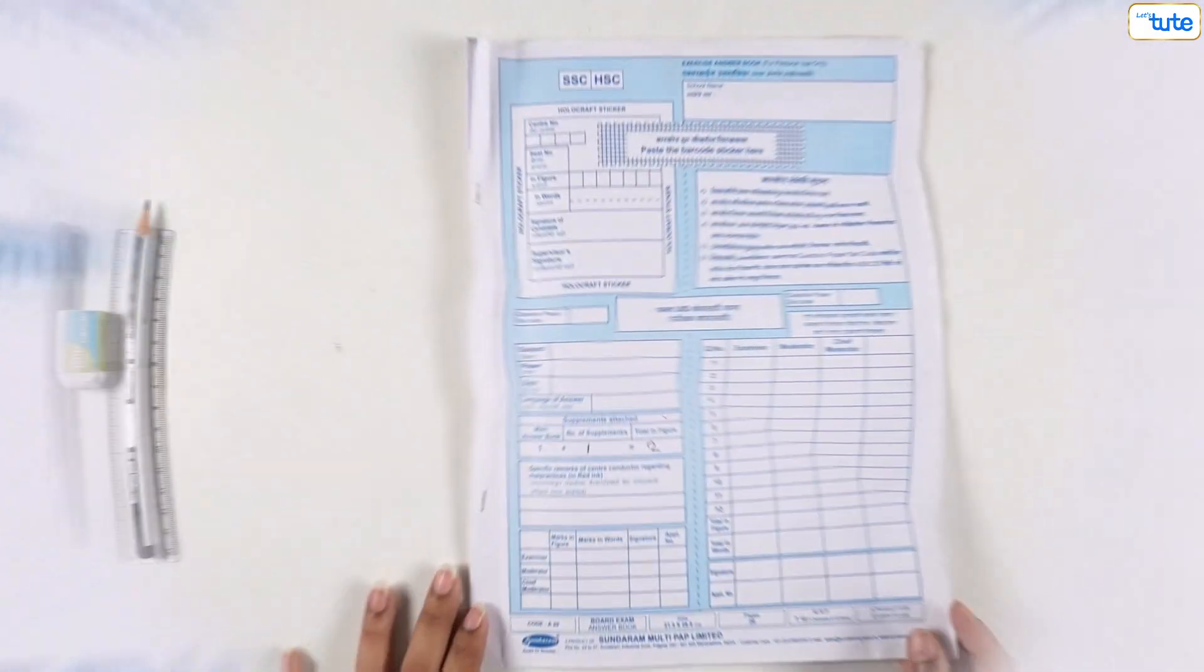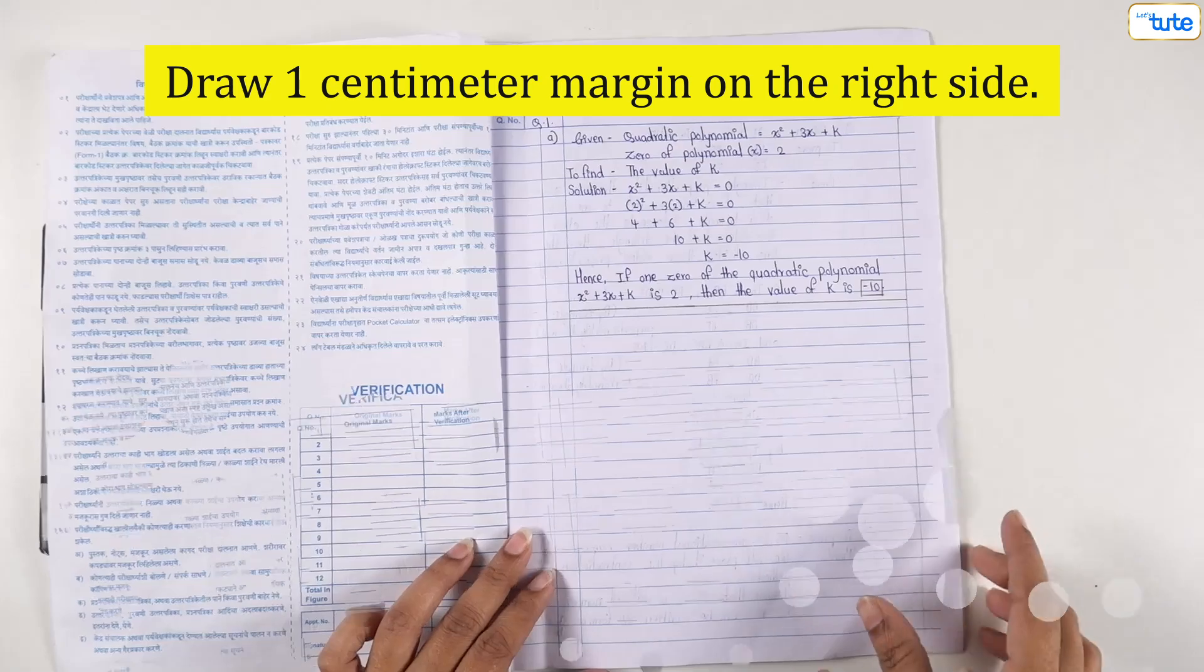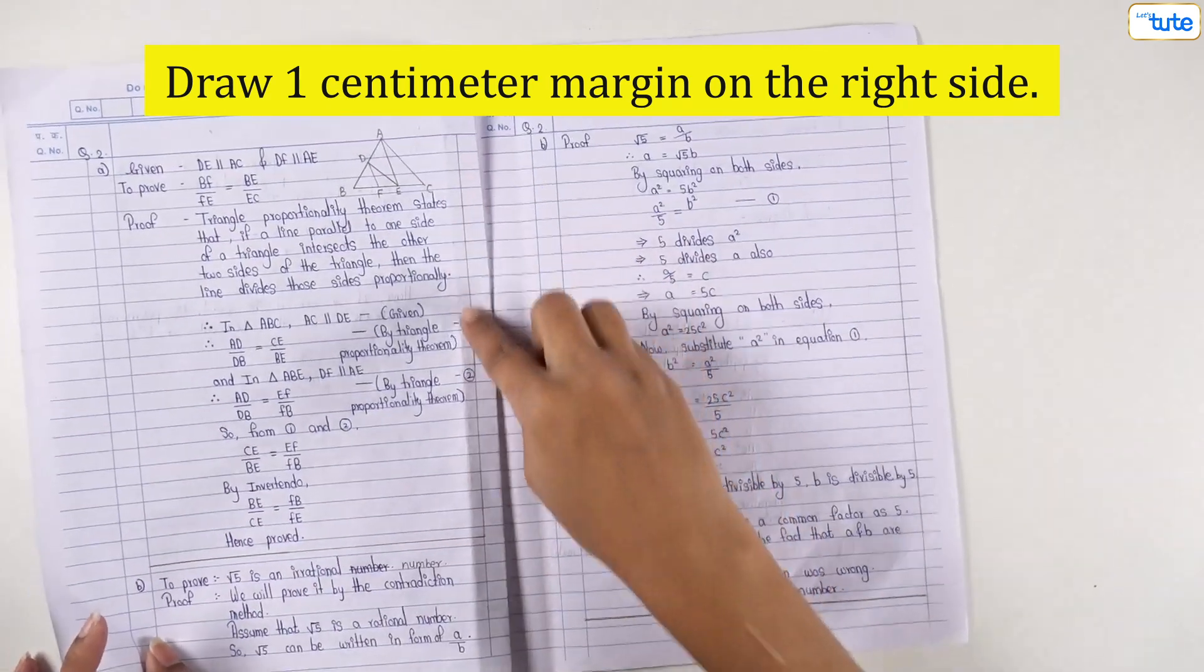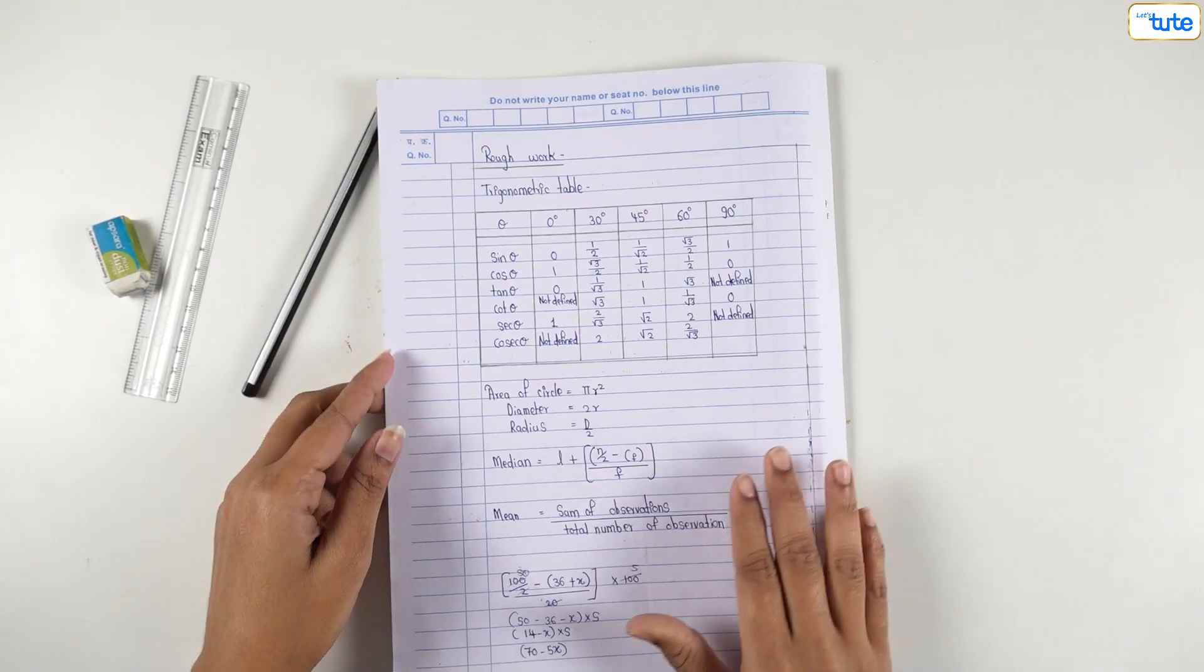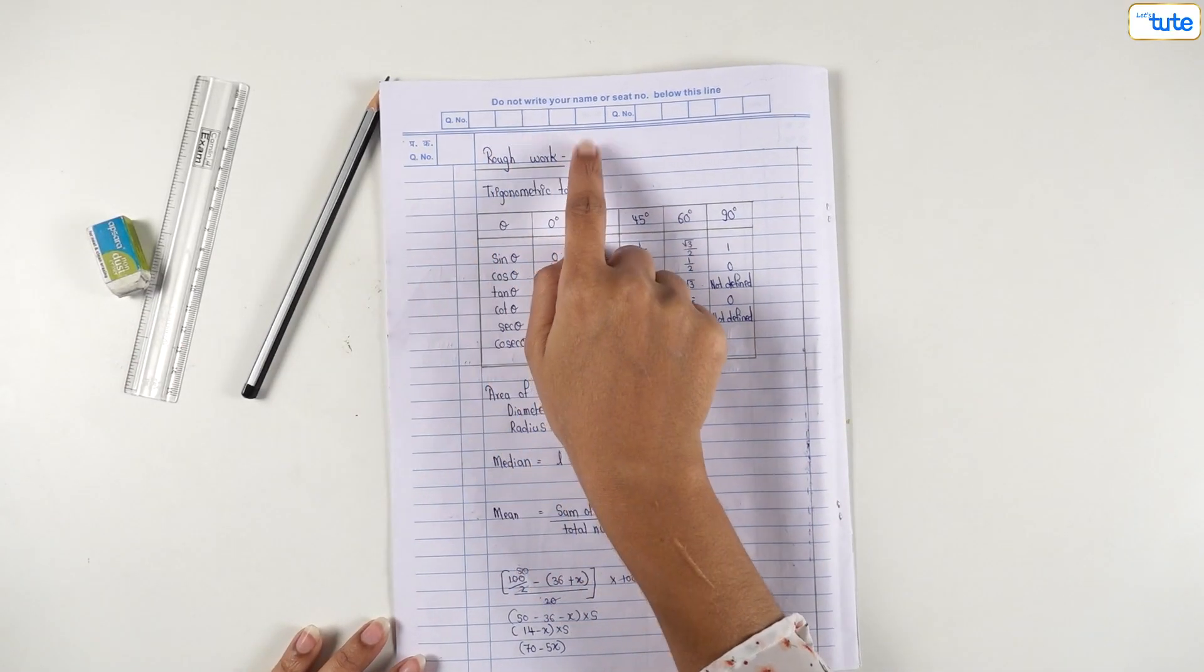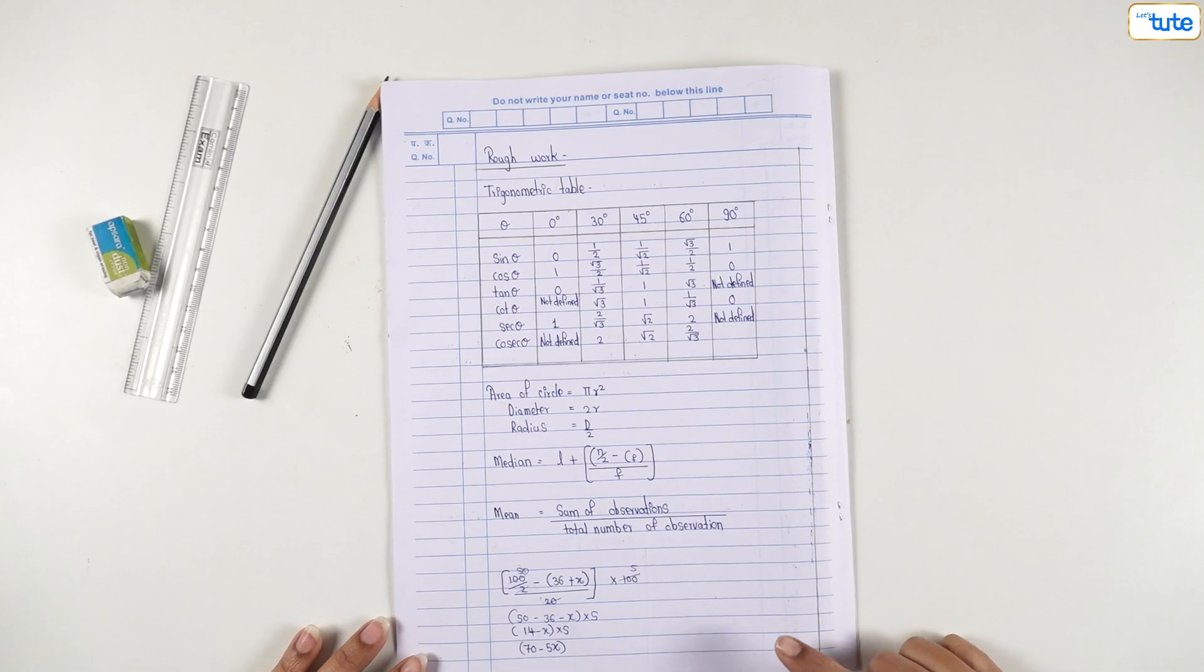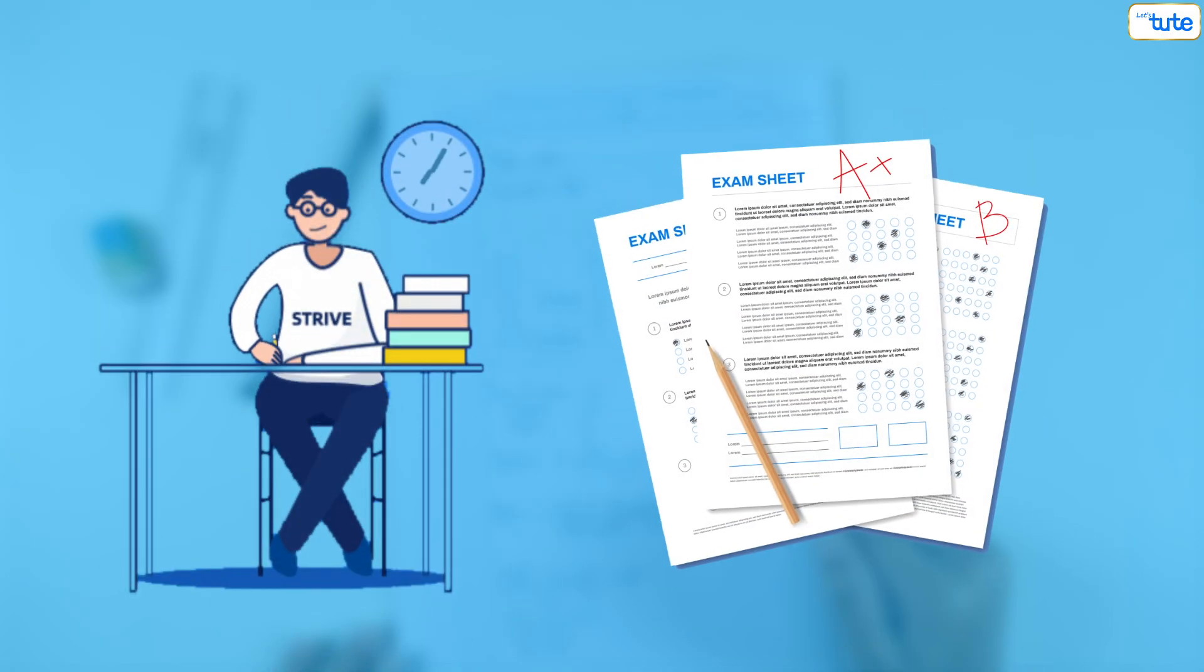Firstly, as soon as you get the answer sheet, spare a few minutes and make one centimeter margin at the right side of each page. After that, move to the last page of the answer sheet and use it for rough work. You can write down some important formulae that are difficult to remember. This will save your time during paper solving.